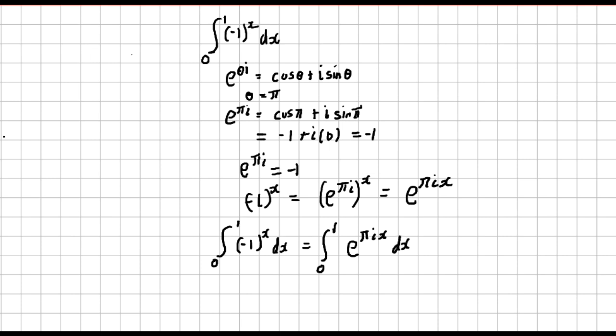So here we can now use algebraic substitution whereby you'll say let u be πix. So if you differentiate u with respect to x, du over dx, πi is a constant. If you differentiate x you get 1, you remain with πi. So if you make dx the subject there, you'll have du is πi dx.